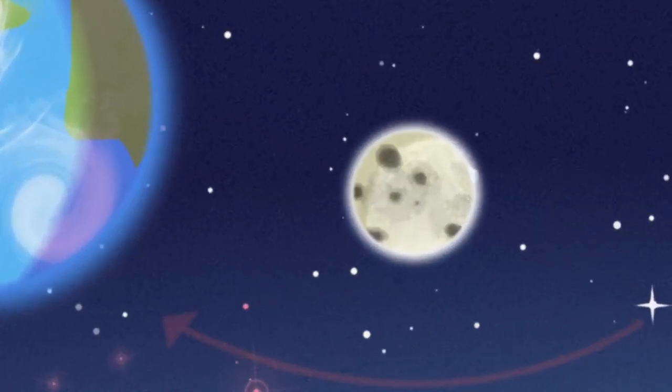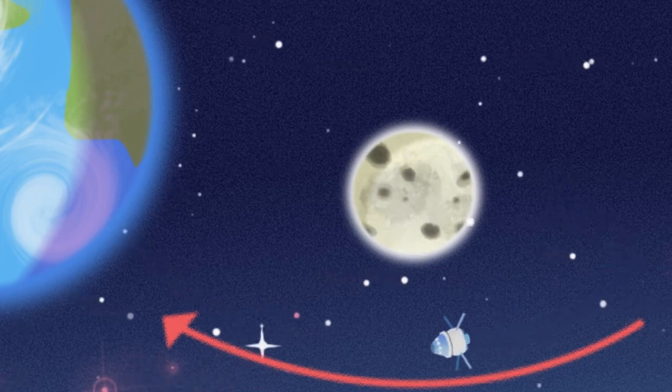The moon travels around the earth in one direction. Orion will go around the moon in the opposite direction.